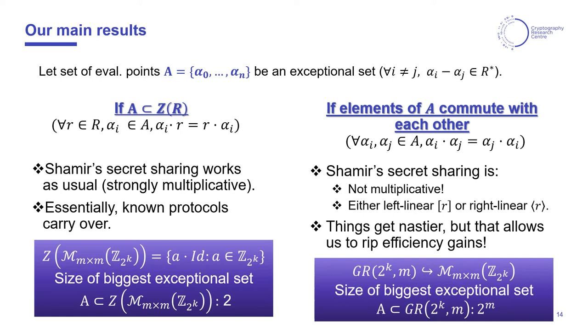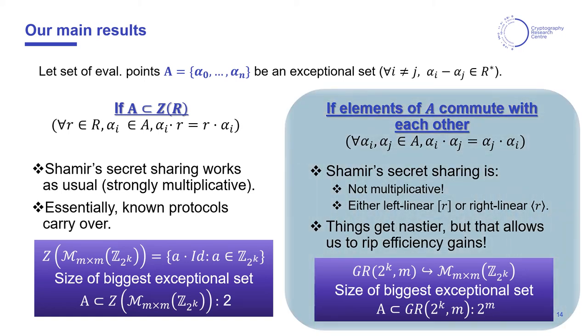We are then presented with a trade-off. If we look, for example, at the ring of n×n matrices over the integers modulo 2^k, the biggest exceptional set that is contained in the center of this ring has size 2, whereas in the more relaxed setting, since the degree m Galois extension of the integers modulo 2^k is a commutative sub-ring of this ring of matrices, we can find a suitable exceptional set with this relaxed commutative property of size 2^m. Most of our work looks at this scenario, since if we were to emulate the arithmetic of this matrix ring using prior work, that would basically require using a Galois ring element for each entry of the matrix ring, even though this can be amortized using some prior works.